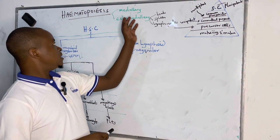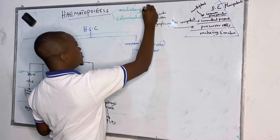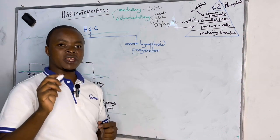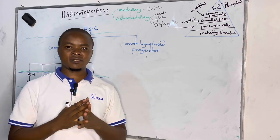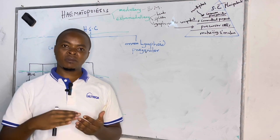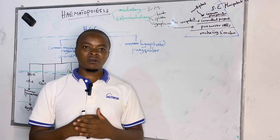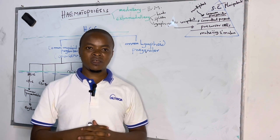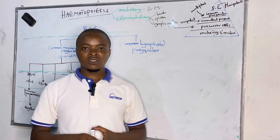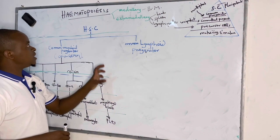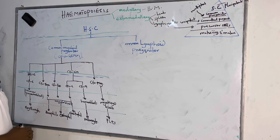Extramedullary means outside the bone marrow. The myeloid stage occurs in the bone marrow, majorly the red bone marrow. That's why in children below 18, hematopoiesis occurs in all bones because all bones contain red bone marrow. But above 18, it becomes committed to the ends of the long bones and flat bones, as those are the ones containing red bone marrow. So we want to continue expounding on how hematopoiesis — the formation of blood — occurs.